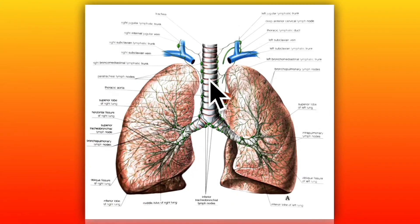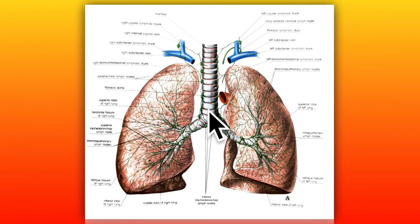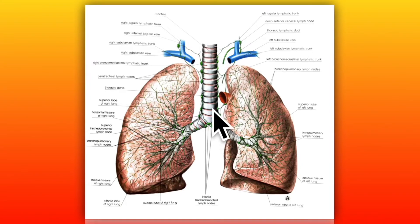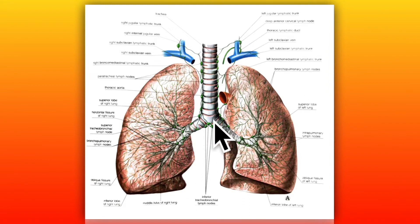The trachea, or the windpipe, is a cartilaginous and membranous tube forming the beginning of the lower respiratory passages. It extends from the lower part of the larynx, on a level with the 6th cervical vertebra, to the upper border of the 5th thoracic vertebra, where it divides into two bronchi, one for each lung, as you can see in this diagram.